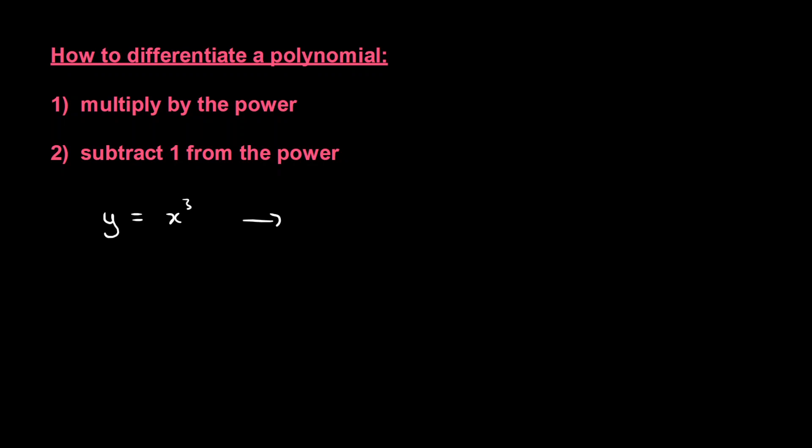So in other words, if we were to differentiate this, we would get 3x squared, right? The power comes down to the front, we multiply by the power, and then we subtract 1 from the power.